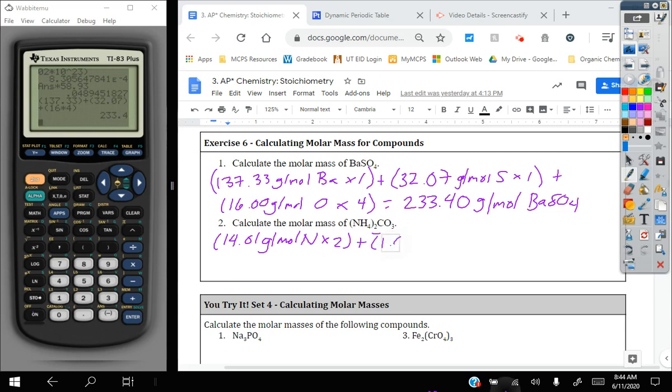For hydrogen, we have 1.01 grams per mole. And there's four on the inside times two on the outside. Four times two is eight. So this one we're actually multiplying by eight. We've got 12.01 grams for carbon, technically times one because there's one carbon. And then we've got to add 16 grams per mole for oxygen times three because there's three of them.